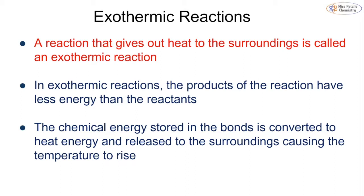Let's start off by looking at exothermic reactions. You have learned these back in key stage 3, particularly in year 9. If we have a reaction that gives out heat to the surroundings, then we call this an exothermic reaction. This means that our products are going to have less energy than the reactants, because the reactants are releasing or losing that heat to the surroundings. The chemical energy stored in the bonds is converted to heat energy, so you will see your temperature increase for an exothermic reaction.